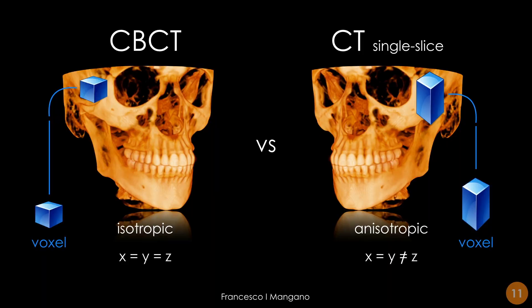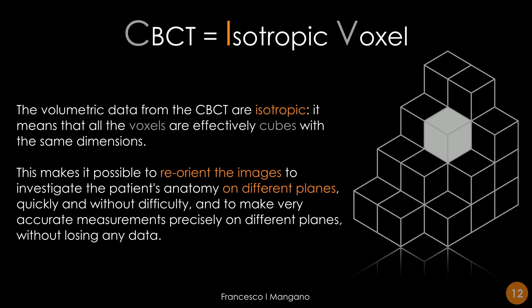We can see the difference between single-slice medical CT versus CBCT: in CBCT the voxel is isotropic, while in medical CT it is anisotropic. The volumetric data from CBCT are isotropic, meaning all voxels are effectively cubes with the same dimensions. It is therefore possible to reorient the images and investigate the patient's anatomy on different planes. The software can reconstruct different multiplanar reconstructions without any issue, without losing any data — and this is quite important.